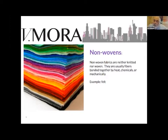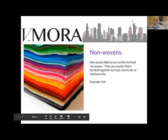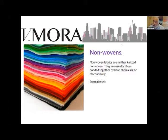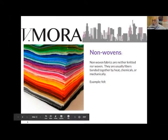Non-wovens — felt is one example, and neoprene is actually a non-woven. Interfacing is also often non-woven. Disposable medical fabrics with a barrier applied are frequently non-woven — there's no thread in them; they don't weave or knit it, they just press it together. It's a fabric made by pressure. Non-woven is generally what you'll use least of in apparel.